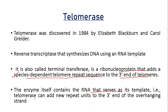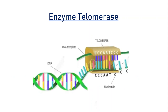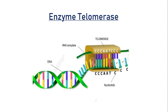Telomerase can add new repeated units to the 3' end of the overhanging strand. Looking at the structure of telomerase: here is the DNA molecule with the telomere portion of the chromosome. The telomerase contains an RNA template acting as a primer for DNA synthesis, lengthening the end of the telomere. A sequence complementary to the DNA sequence is present on the RNA template, helping in the joining of new nucleotides to the DNA.